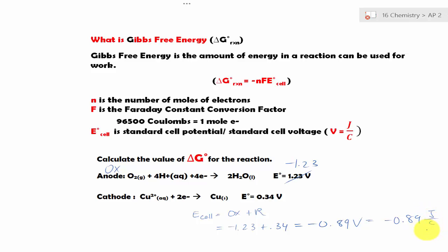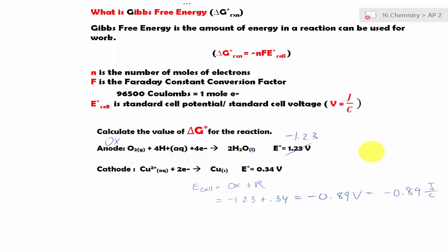Which is equal to -0.89 joule over coulomb. We want this in coulombs because the Faraday constant is in coulomb. Since F is a constant which will be given to us, now we only have to worry about n.